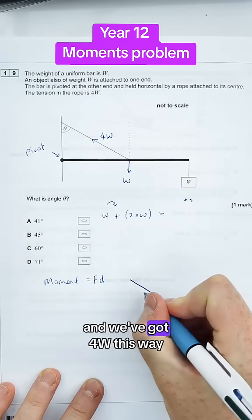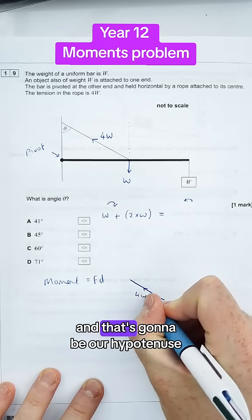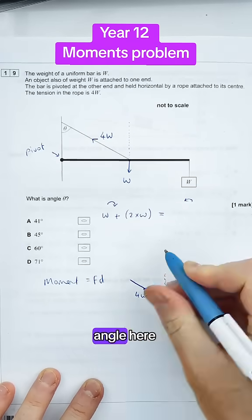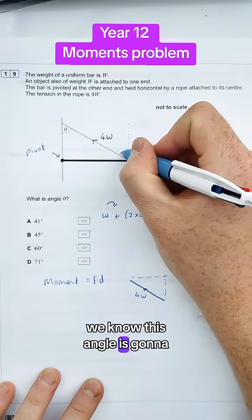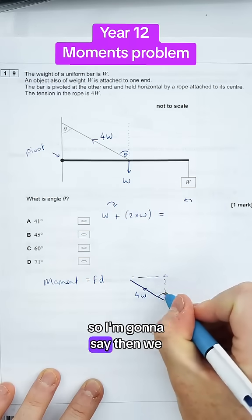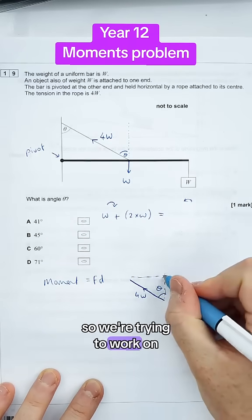So let's draw a little triangle out, and we've got 4W this way. That's going to be a hard plot in use. We're trying to work out this angle here. And because of similar angles, we know this angle is going to be the same as that angle. So I'm going to say that we know this angle here. So we're trying to work out in this direction.